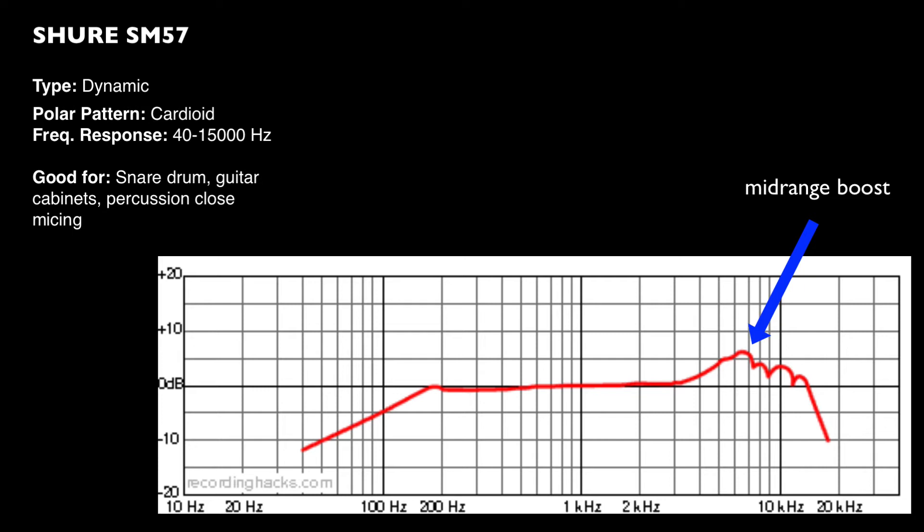You'll also notice that it falls away above 15 kilohertz very sharply, and if you look at the low end of the microphone it starts to fall away underneath about 180 hertz and it's 10 dB down by the time it gets to 40 hertz. So it doesn't have a lot of low end, but what it does have is a lot of mid-range presence, which makes it a very popular and very good choice for sounds that need a lot of mid-range definition.